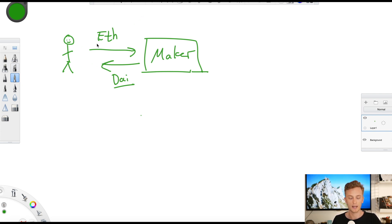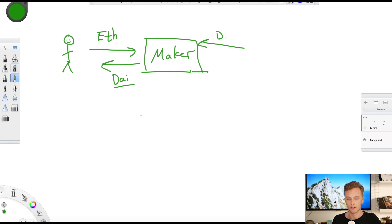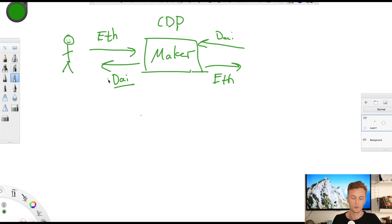They put in Ether to get DAI back, and they can then later on hand back their DAI and get their Ether back — and then they pay a fee called a stability fee when they pay back. So they pay in Ether and get DAI back. The other side is that you put in DAI and you get Ether back — you pay back your loan. This is called a CDP, a collateralized debt position. There is an interest rate called the stability fee; previously it was around 1%, now it is 3.5% because they are trying to stabilize the system.